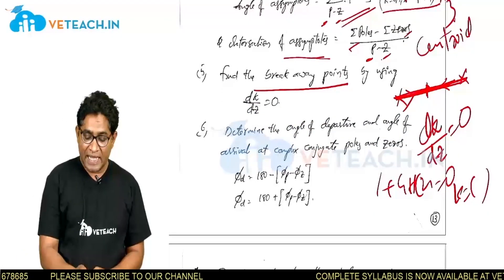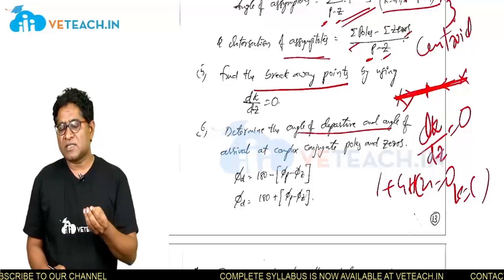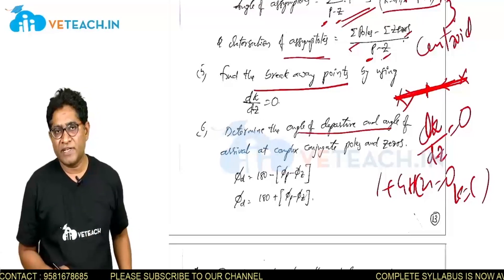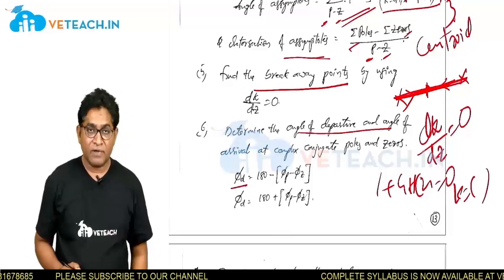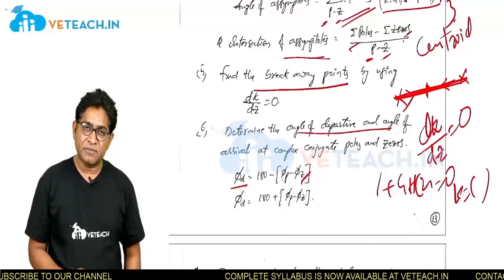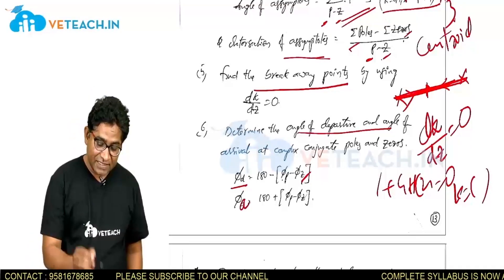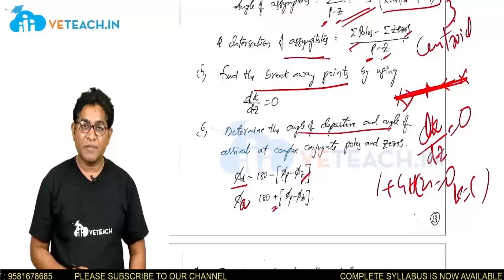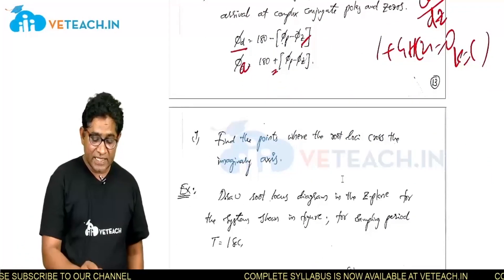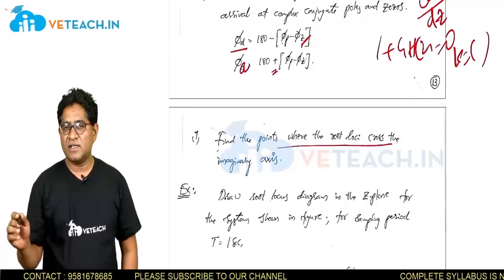Next, determine the angle of departure and angle of arrival. These exist when there are complex conjugate poles or zeros. The angle of departure is 180° − φp + φz, where φp is the angle subtended by the remaining poles and φz by the remaining zeros. The angle of arrival is 180° + φp − φz. Finally, find the points where the root locus crosses the imaginary axis.